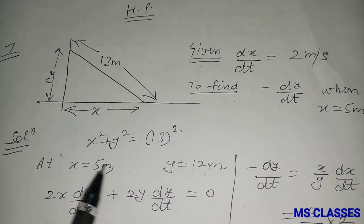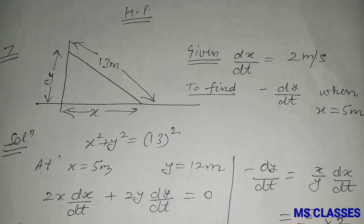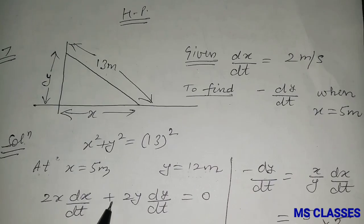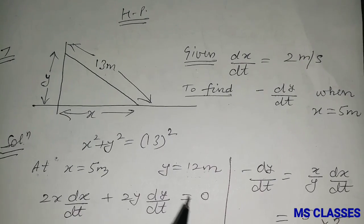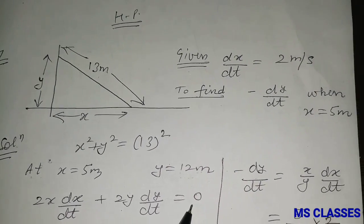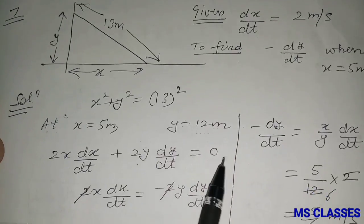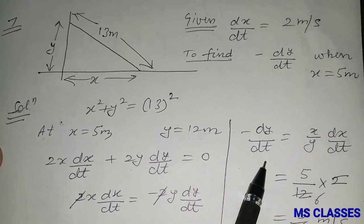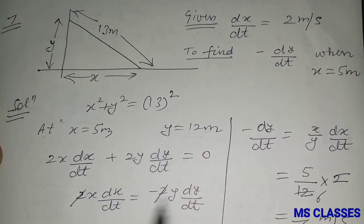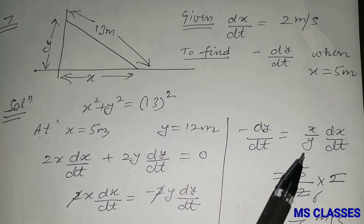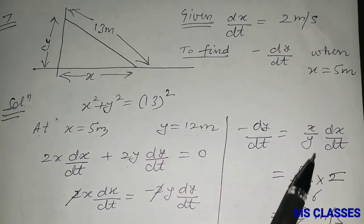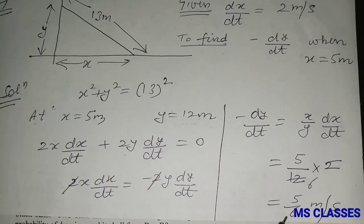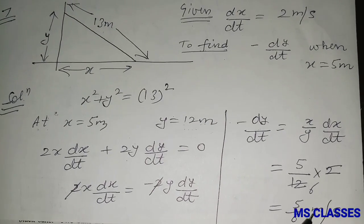Differentiating x² + y² = 169 with respect to t gives 2x(dx/dt) + 2y(dy/dt) = 0. Simplifying: -dy/dt = (x/y)(dx/dt). Substituting x = 5, y = 12, dx/dt = 2, we get dy/dt = -5/6 m/s. So the height is decreasing at 5/6 metres per second.